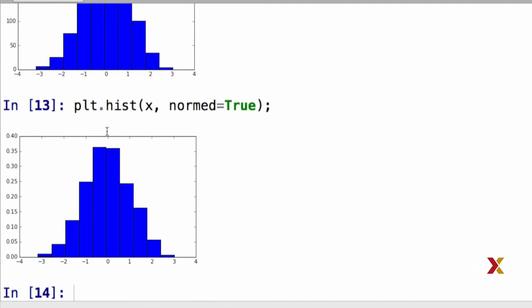the histogram, in this case, on the y-axis, instead of having the number of observations that fall in each bin, we have the proportion of observations that fall in each bin. That's what it means for a histogram to be normalized.